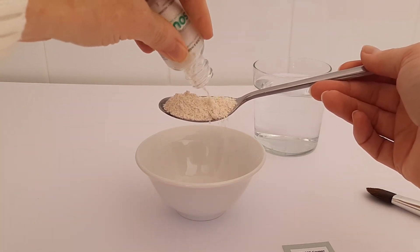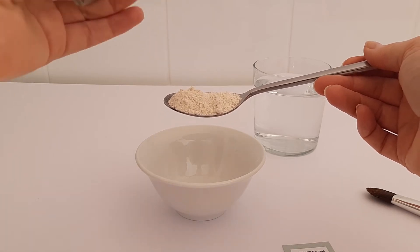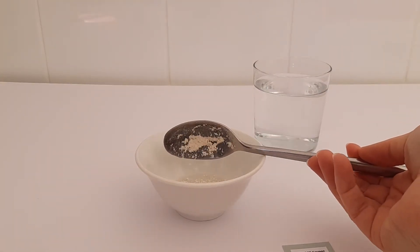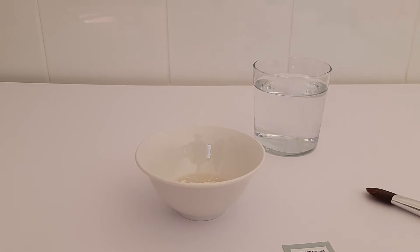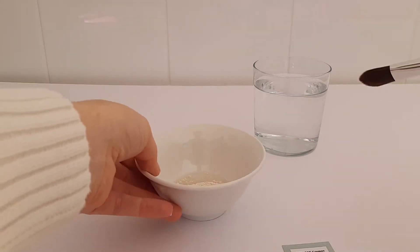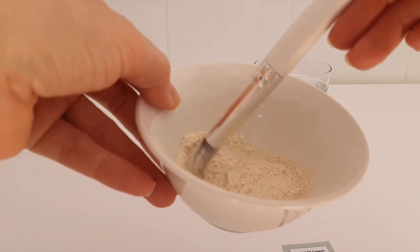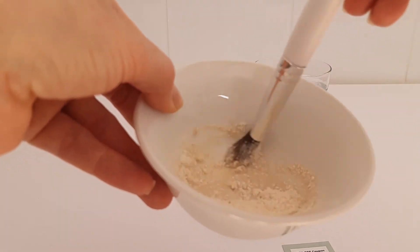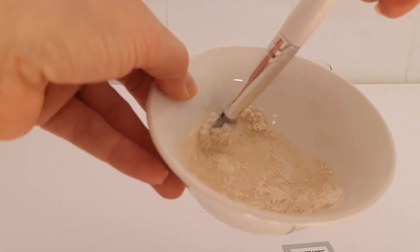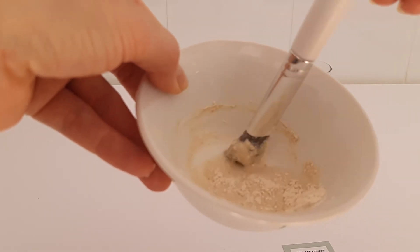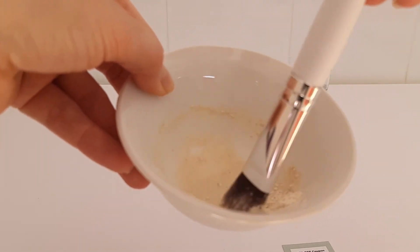There we go, a nice generous tablespoon of powder. Now we're going to give it a good mix with our brush. This is going to mix into a nice thick, creamy, grainy paste. You can actually add more water to it if you want to thin it down a bit or make it a little bit gentler.